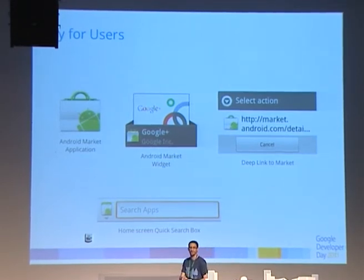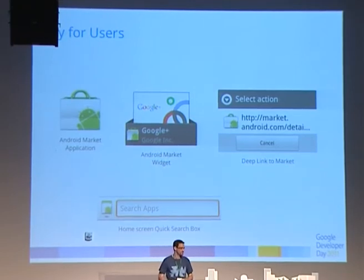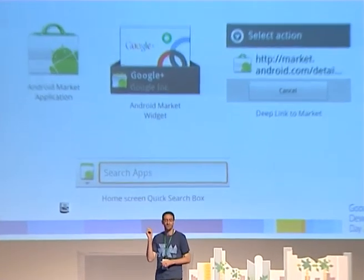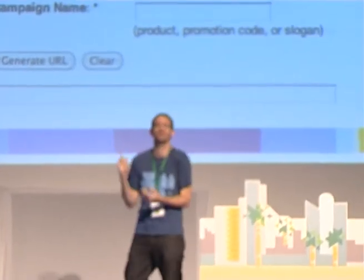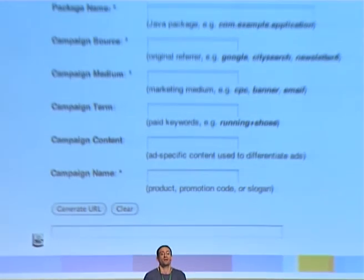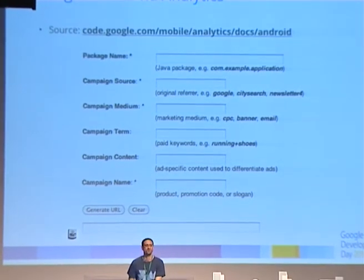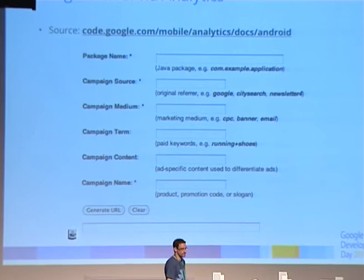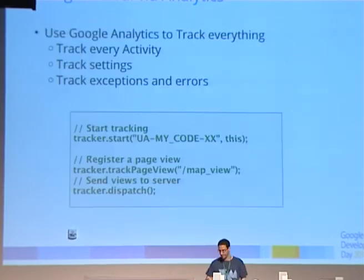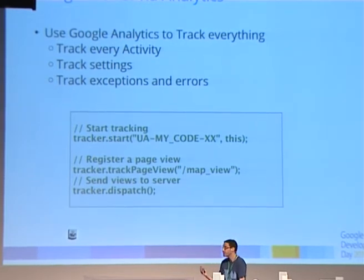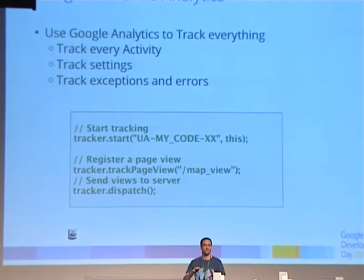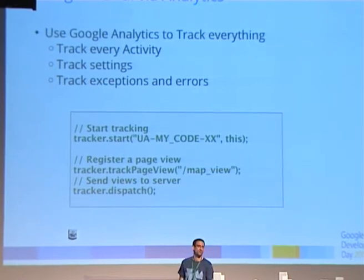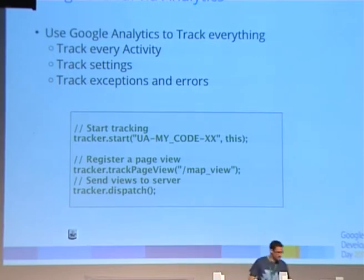So you get the users in — they've done the download, maybe they used NFC share or Android Beam to find it. Then you need to track your users. We recommend using Google Analytics. It's one way of giving data to your marketing and sales teams; they can log into the Google Analytics account and see all that data. Go to Google Analytics, grab the library, get a tracker object, and call tracker.start. From that point on, you can track anything you want: button clicks, page views, exceptions. It's really useful data to have. When you call dispatch, maybe on your onPause method, it synchronizes with the server and sends all that data up.